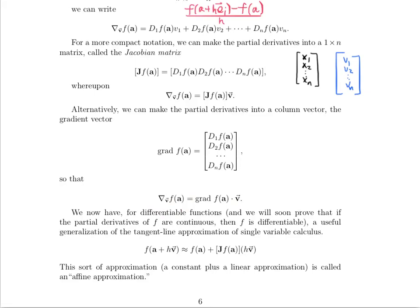We have these differentiable functions, and we'll soon prove that if the partial derivatives of f are continuous, then f is differentiable. This gives us a useful generalization of the tangent line approximation from single-variable calculus. The idea is: if you know the function value at a blue point but want to find the function value at a nearby black point, you use the tangent line. You know the function value at that point and the slope of the tangent line, and you crawl out along the tangent line to get an approximation. The closer you are to the point of evaluation, the better the approximation.